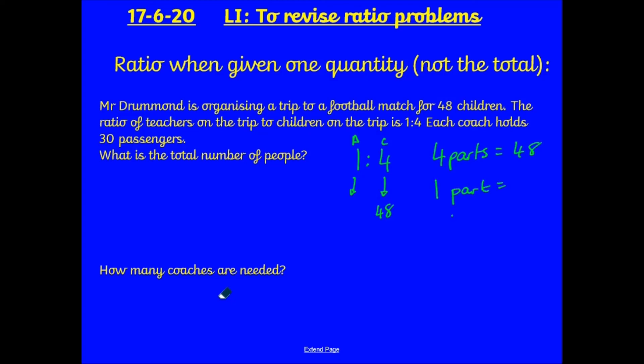So, to do that, I will do 48 divided by how many parts there are? In this case, there are 4 parts that equal 48. 48 divided by 4 is equal to 12. So, I now know that 1 part is equal to 12. Well, this is nice and easy because adults only have 1 part. So, it would be 12 times 1. So, that is just 12. So, the adults are 12. Children are 48. I can now add these together to get my total number, which would equal to 60. What's the total number of people? There are 60 people.